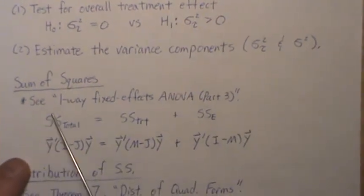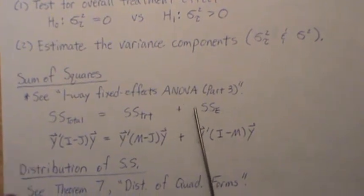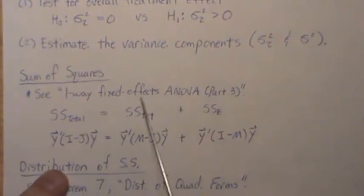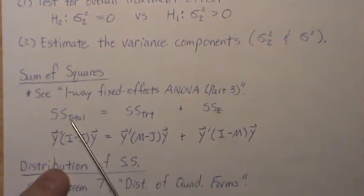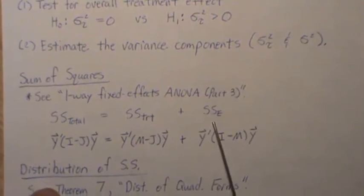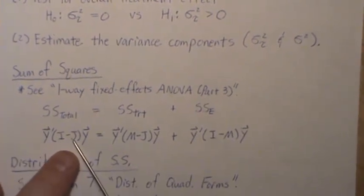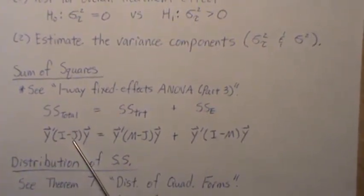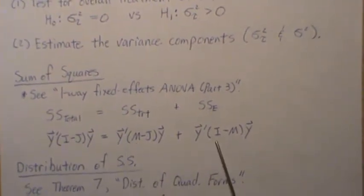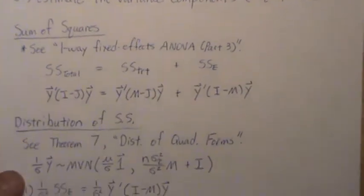The sum of squares derivation is the same as in one-way fixed effects ANOVA — I'll skip it here but you can refer back to that video. The sum of squares total equals sum of squares treatment plus sum of squares error. In matrix notation, using J as the perpendicular projection onto the column space of ones, and M as the perpendicular projection onto the column space of X, these partition the sum of squares total.